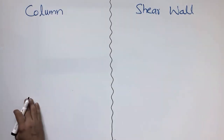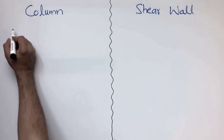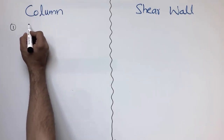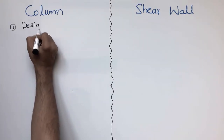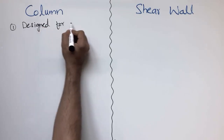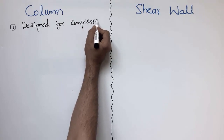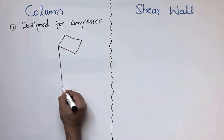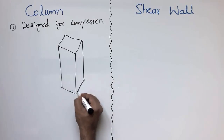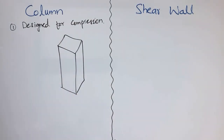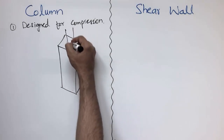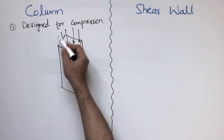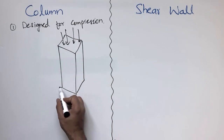The first difference is that the column is a structural member used to take the compressive load. Columns are mostly designed for compression. They take the load in compression, that's why a column is sometimes called a compressive member. They are not mostly designed for lateral loads or sideways loads; they take compressive load and transfer it to another column or to the foundation.